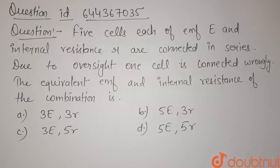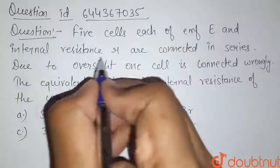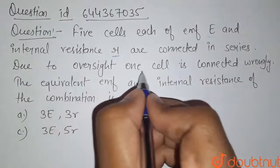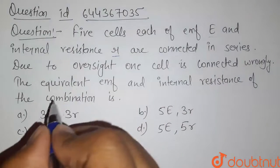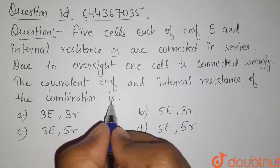Hello students, here is our question. Five cells, each of EMF E and internal resistance R, are connected in series. Due to oversight, one cell is connected wrongly. The equivalent EMF and internal resistance of the combination is...